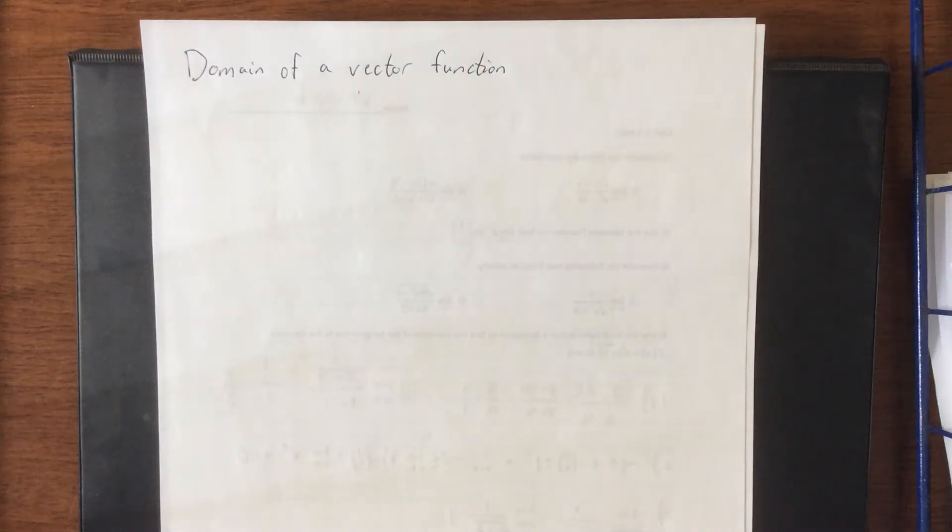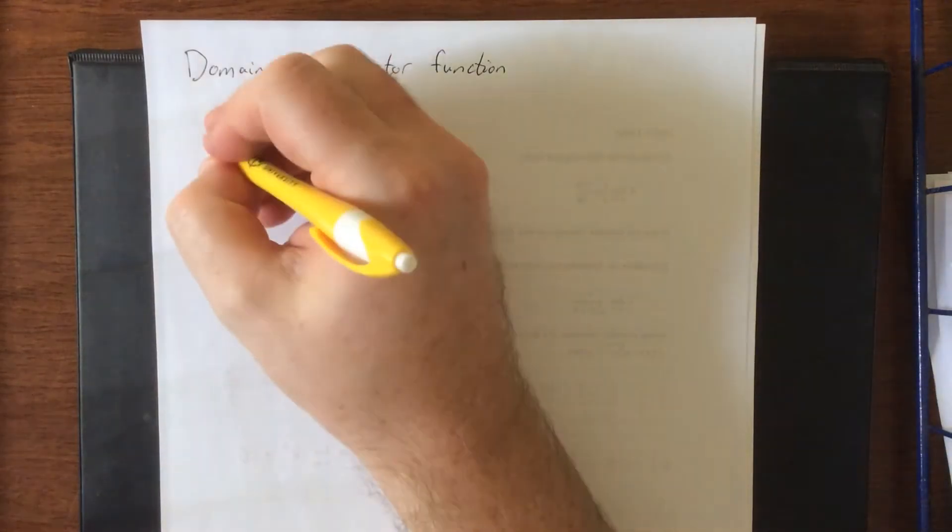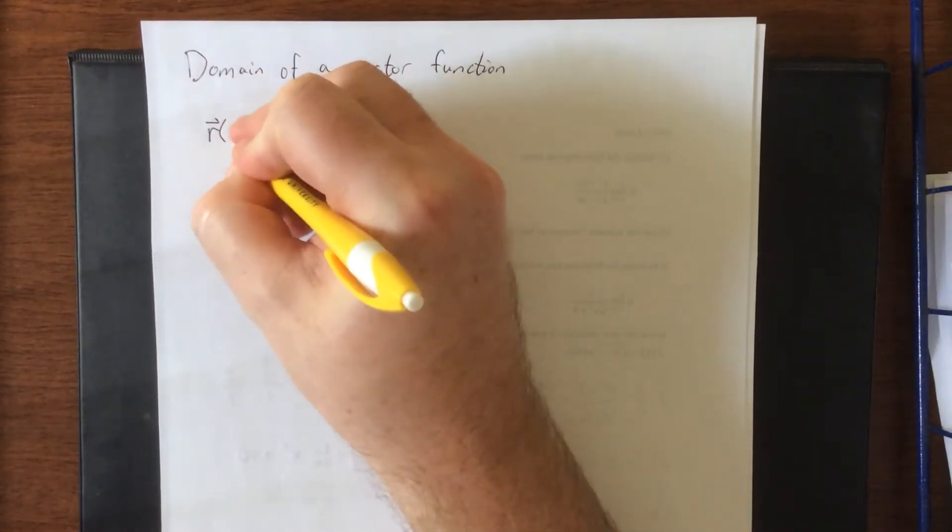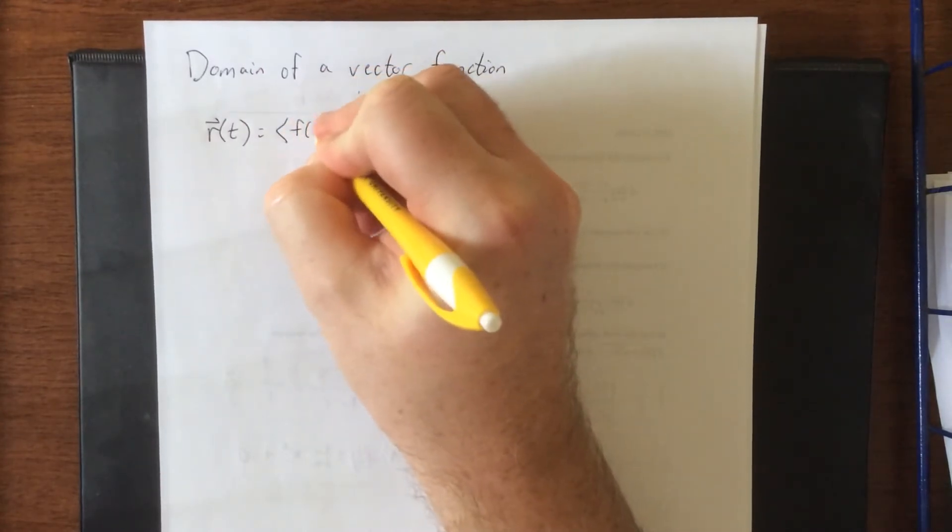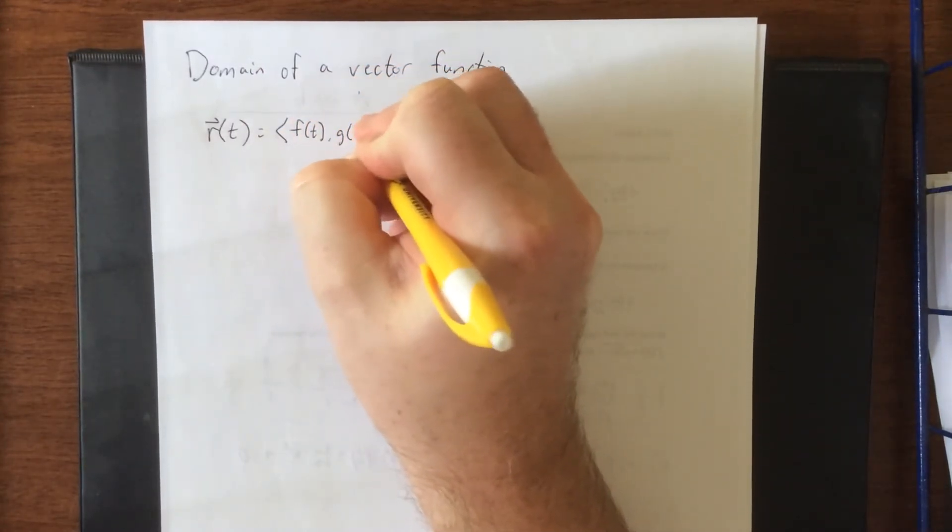So if we're going to talk about functions, it's going to be important for us to talk about the domain of a vector function as well. So let's say that you have yourself a vector function like r of t is equal to, we'll make this one a three-dimensional vector function.